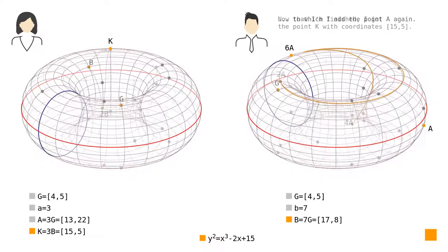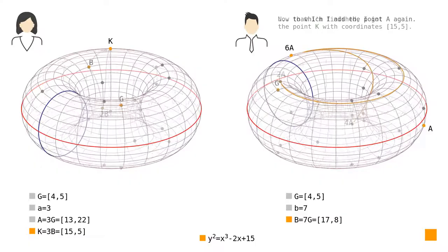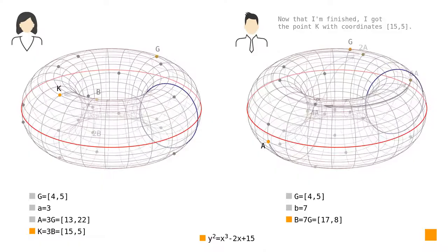Summing the points 4A and 2A, I end up with the point 6A, to which I add the point A again. Now that I'm finished, I got the point K with coordinates (15, 5).